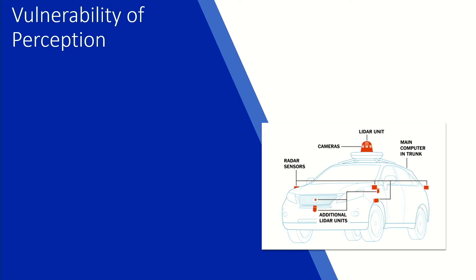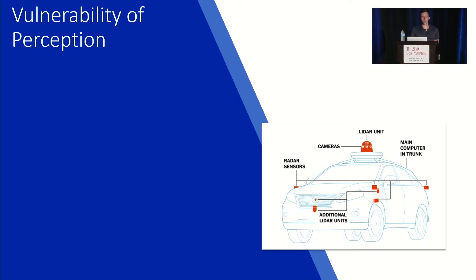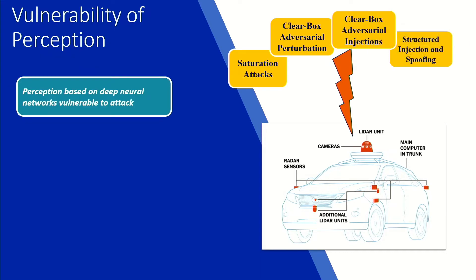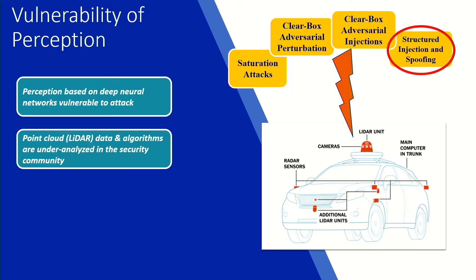A little bit of information on why understanding the vulnerability of perception is important. As we probably all know, autonomous vehicles rely on many sensors, and those sensors, in order to translate that data into meaningful semantic information on the environment, rely on perception. Increasingly, perception is being based on deep neural network architectures. But as has been discovered in prior works, perception using deep neural networks is vulnerable to a wide array of different attacks. The one we're going to discuss today is structured spoofing and injection attacks, because we believe the LiDAR point cloud and its associated algorithms were under-analyzed in the security community.